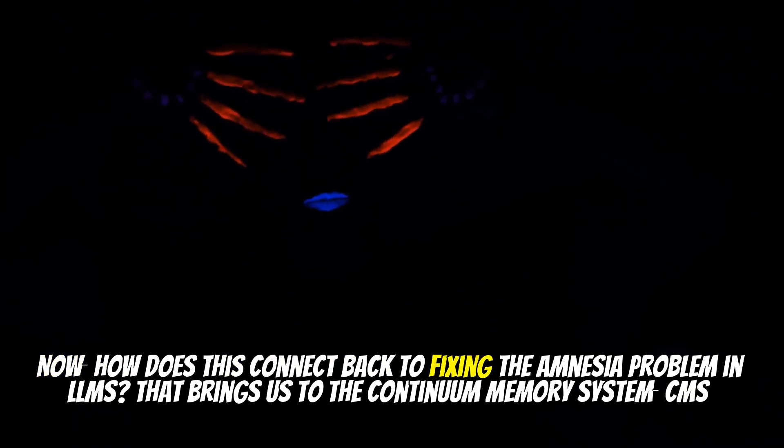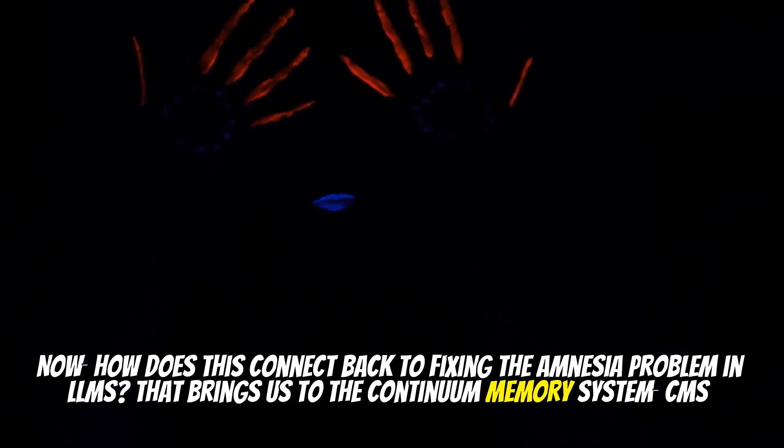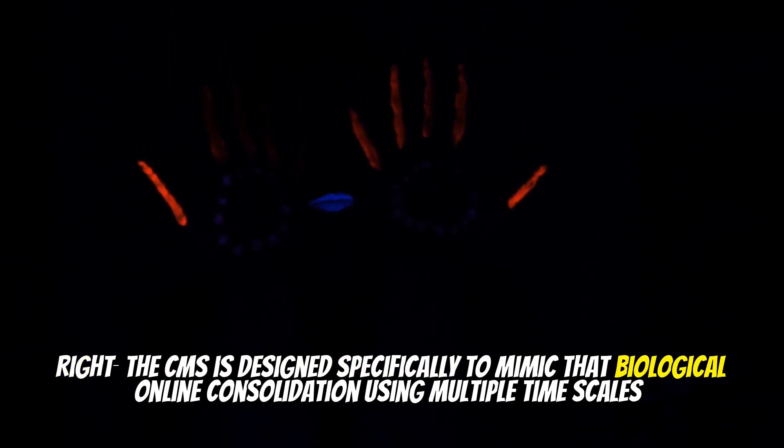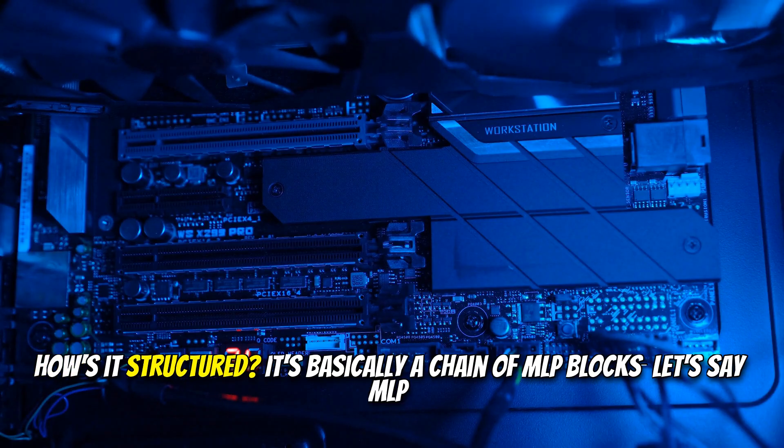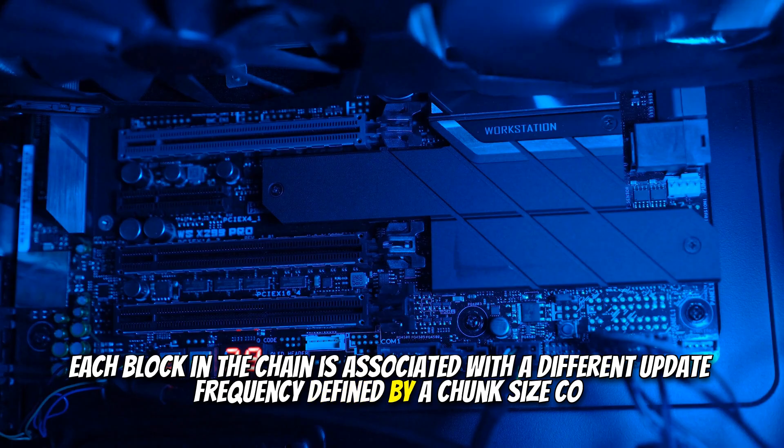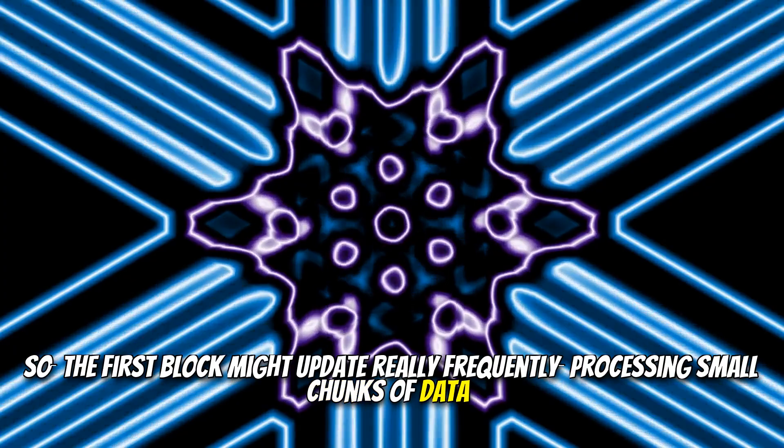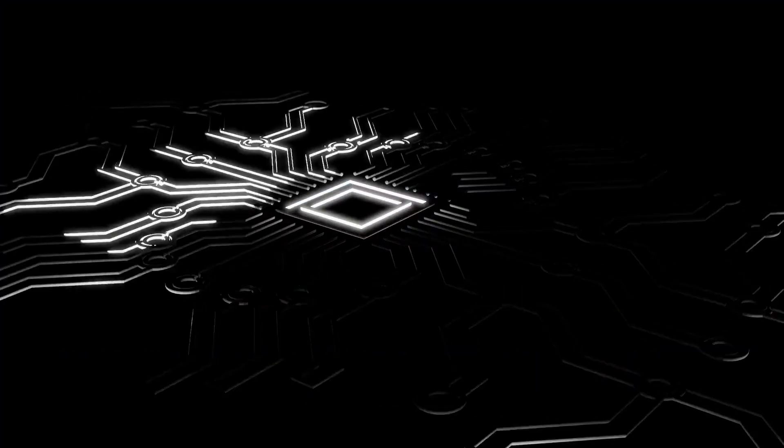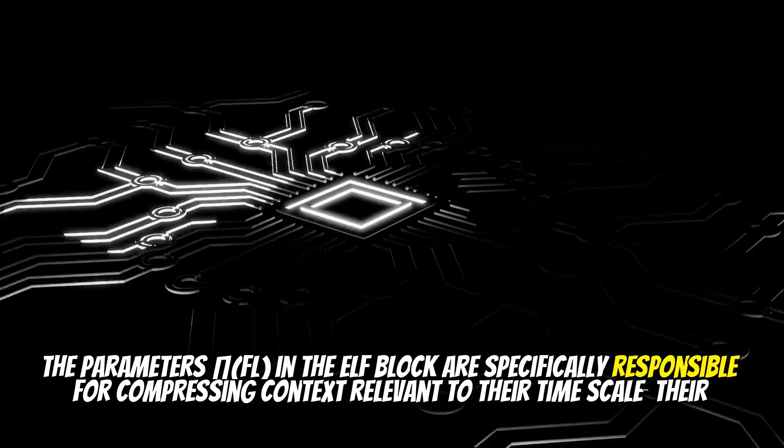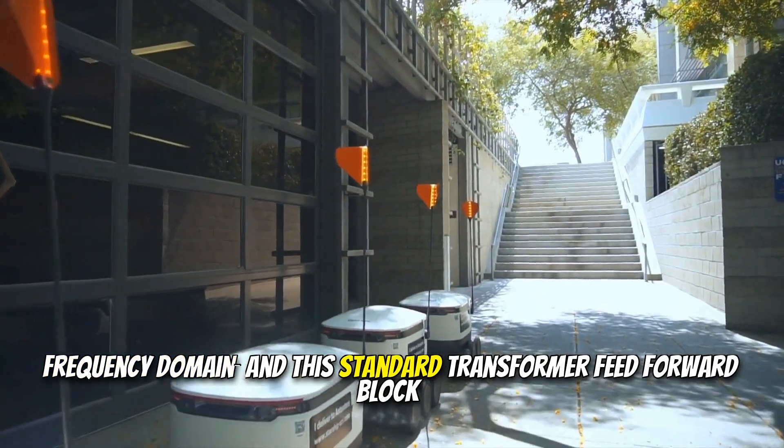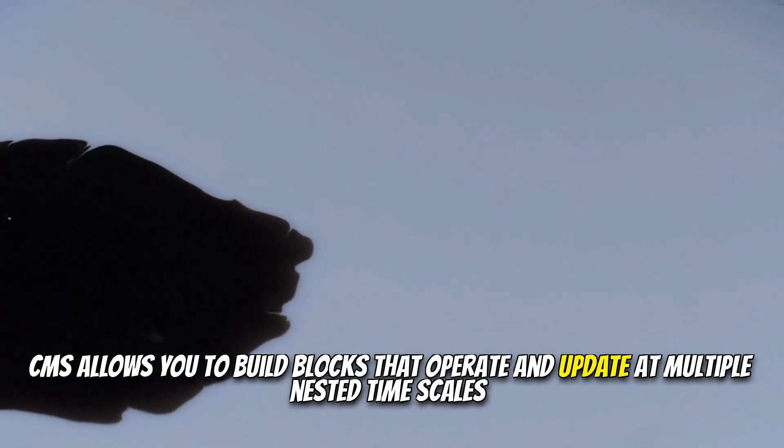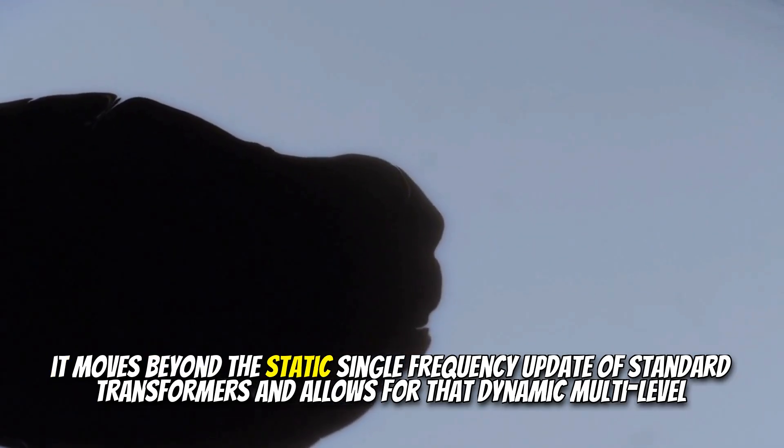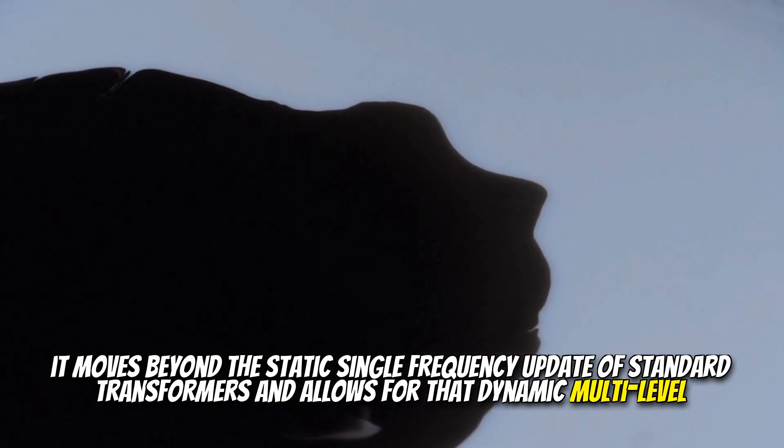Okay. So we have these more powerful, deep optimizers. Now, how does this connect back to fixing the amnesia problem in LLMs? That brings us to the Continuum Memory System, CMS. Right. The CMS is designed specifically to mimic that biological online consolidation using multiple timescales. It generalizes the old binary split of short-term versus long-term memory. How's it structured? It's basically a chain of MLP blocks. Let's say MLP. Each block in the chain is associated with a different update frequency defined by a chunk-sized CO. So the first block might update really frequently, processing small chunks of data. The next block updates less often over larger chunks and so on down the chain. Exactly. The parameters, Thea, in the ELF block are specifically responsible for compressing contexts relevant to their timescale, their frequency domain. And the standard transformer feedforward block. That's just a CMS with only one block, K1, updating at a single frequency. That's the insight. CMS allows you to build blocks that operate and update at multiple nested timescales. It moves beyond the static single frequency update of standard transformers and allows for that dynamic multi-level consolidation.